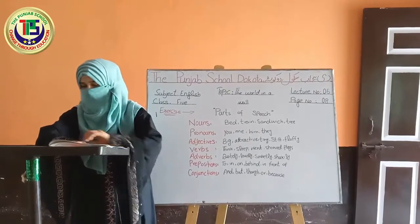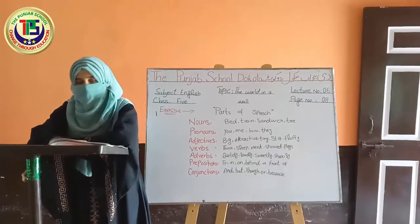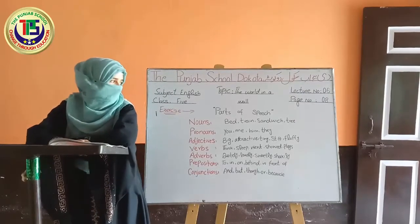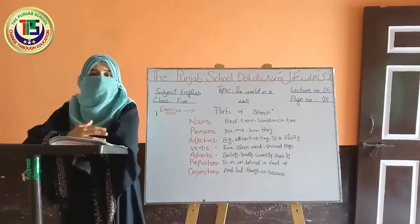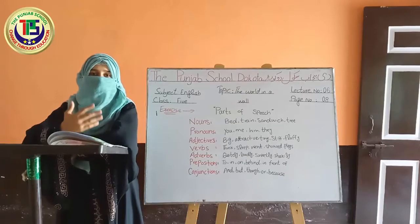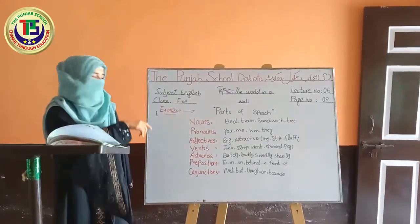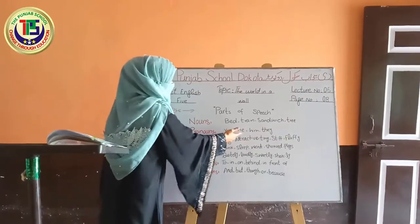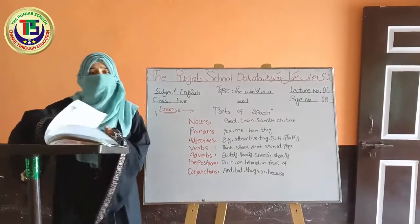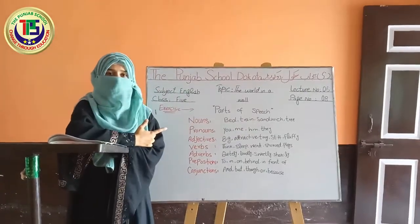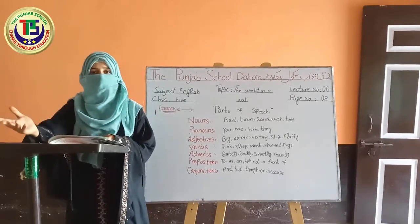Next is pronoun. A pronoun is the word or part of speech that replaces a noun in a sentence. یعنی کے pronoun وہ ہوتا ہے جو نام کو replace کرتا ہے۔ Noun کی جگہ pronoun اس لئے use ہوتا ہے تاکہ noun بار بار repeat نہ ہو۔ جیسے کہ pronouns ہوتے ہیں: you, me, him, they, his, we — یہ سارے pronouns کہلاتے ہیں۔